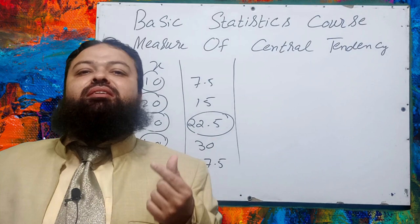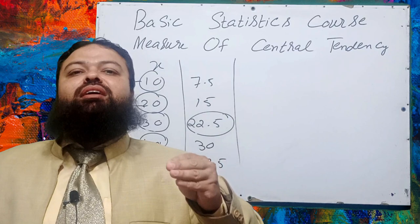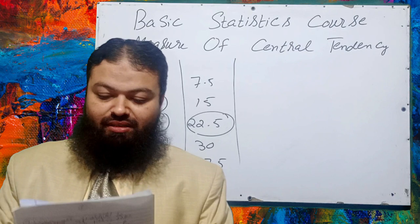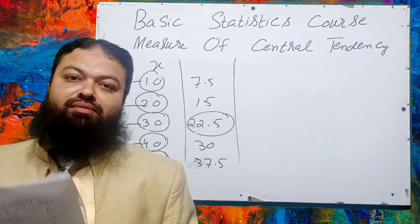What you learned: if all the values of X are decreased by some percentage, then the arithmetic mean, geometric mean, harmonic mean, and median will also be decreased by that same specified percentage.